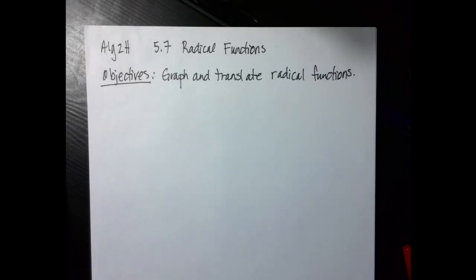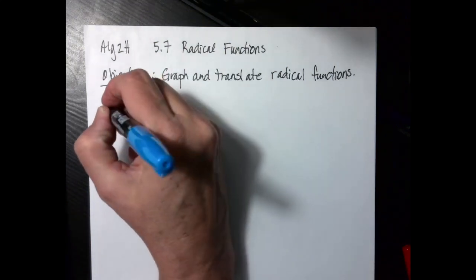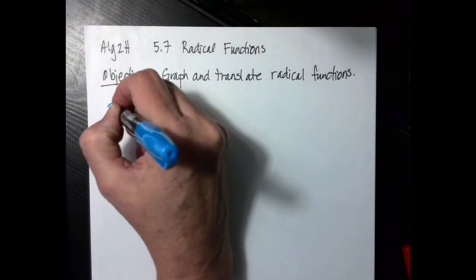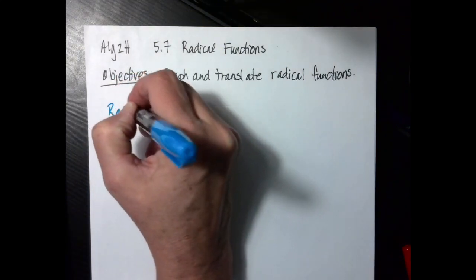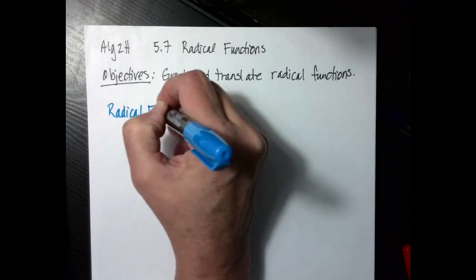Hello math humans, we're going to do section 5.7 today. We're going to talk about radical functions. Our objectives are that we're going to graph and translate radical functions.